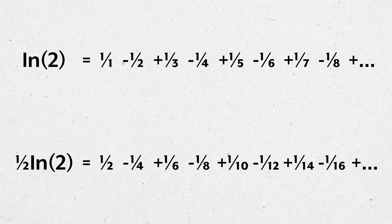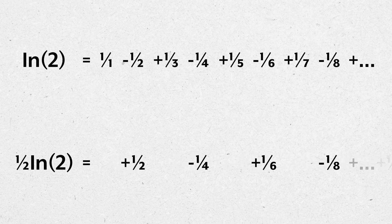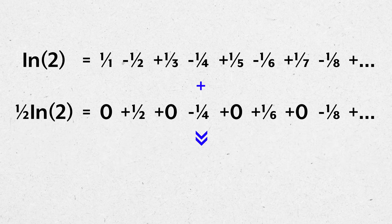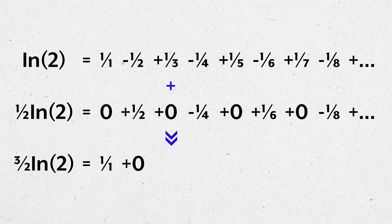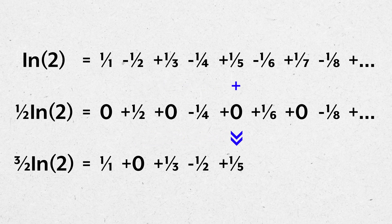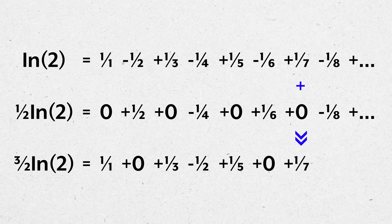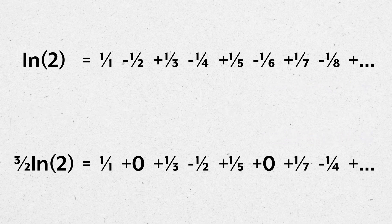Let's put a 0 before each term in this infinite series and add these two infinite series together. We get: 3/2 ln 2 equals 1/1 plus 0 plus 1/3 minus 1/2 plus 1/5 plus 0 plus 1/7 minus 1/4 and so on.